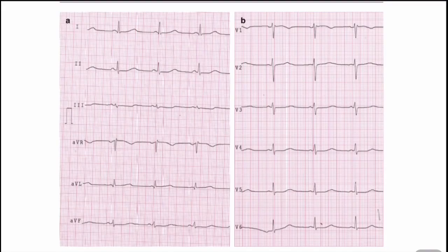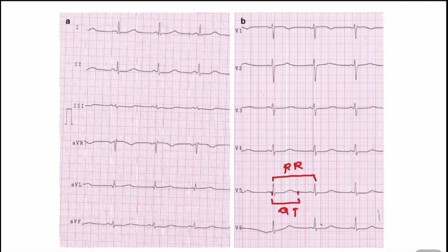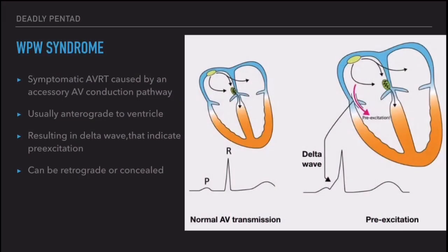In this ECG, we can see the QT interval is more than half of the RR interval — so this is a case of long QT syndrome presenting with syncope. Coming to the next ECG pattern: WPW syndrome, that is Wolff-Parkinson-White syndrome.